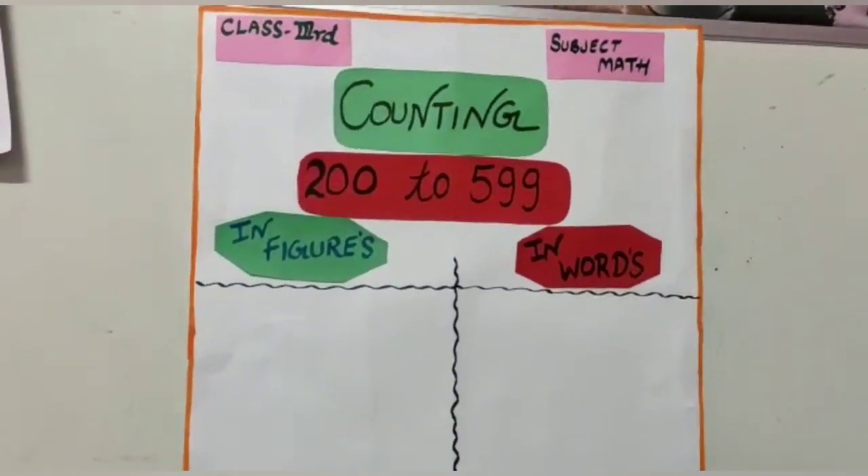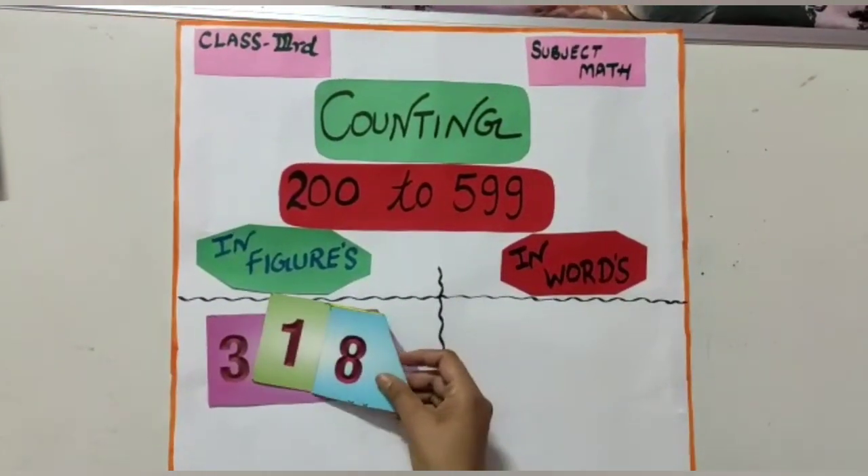Next number is 318. See again, 300, 10, 8, 18.